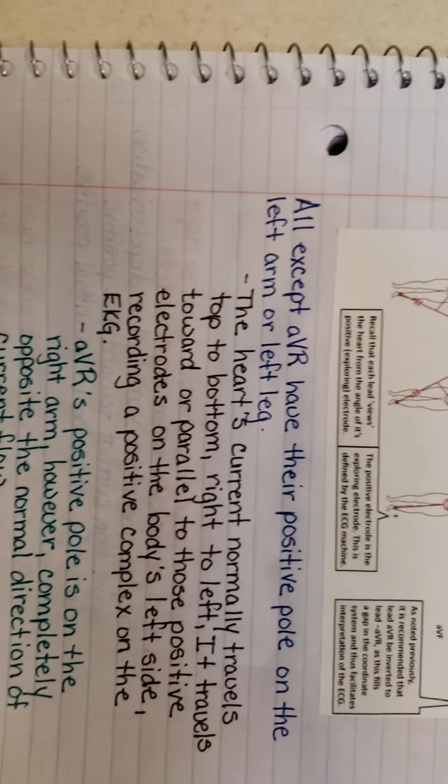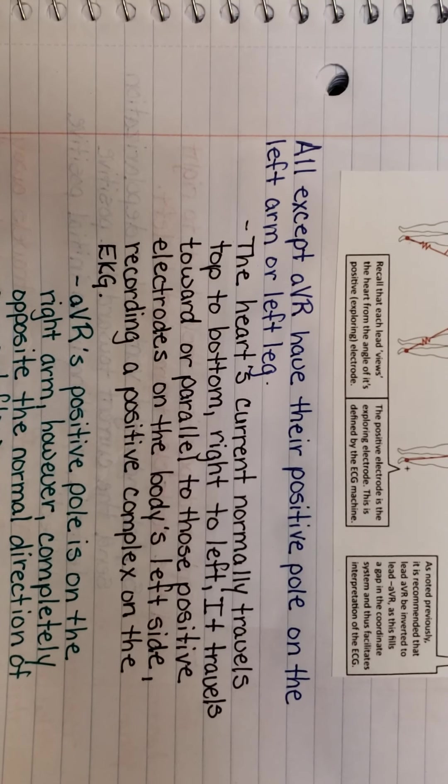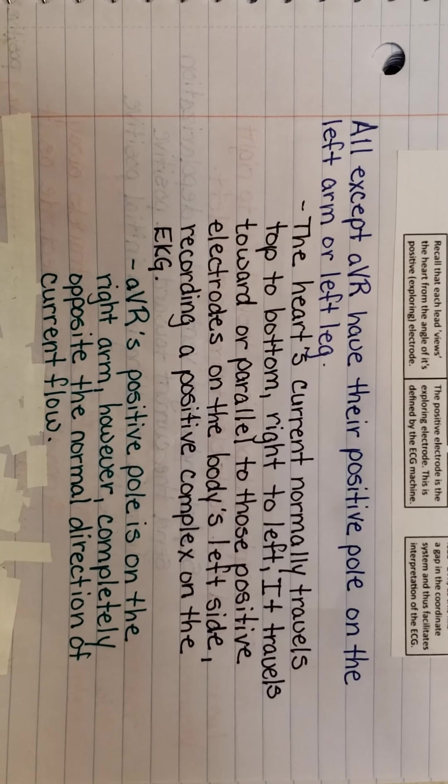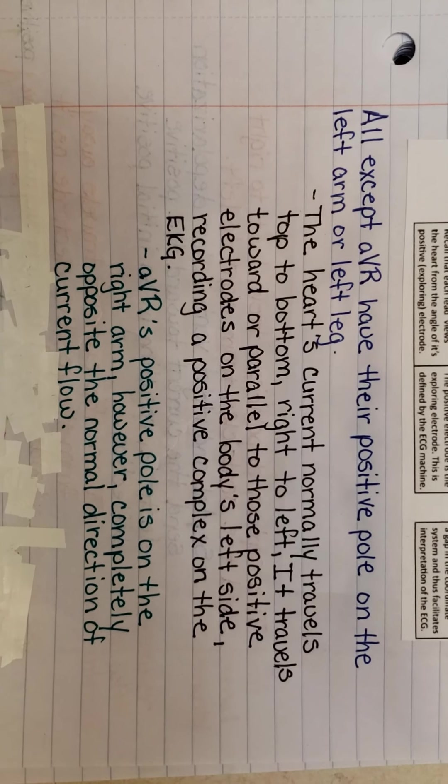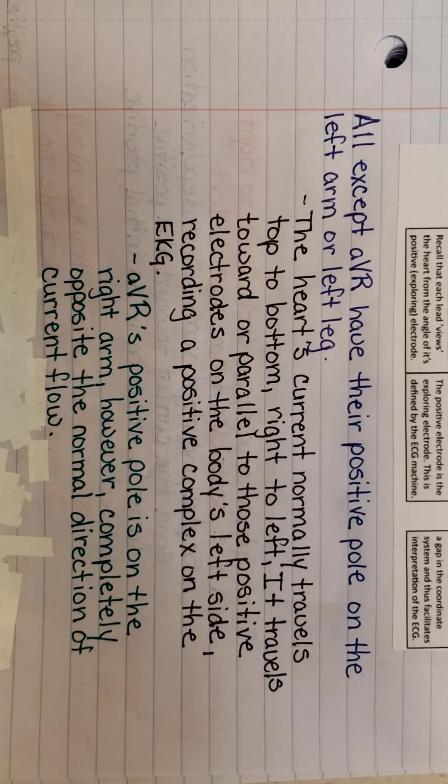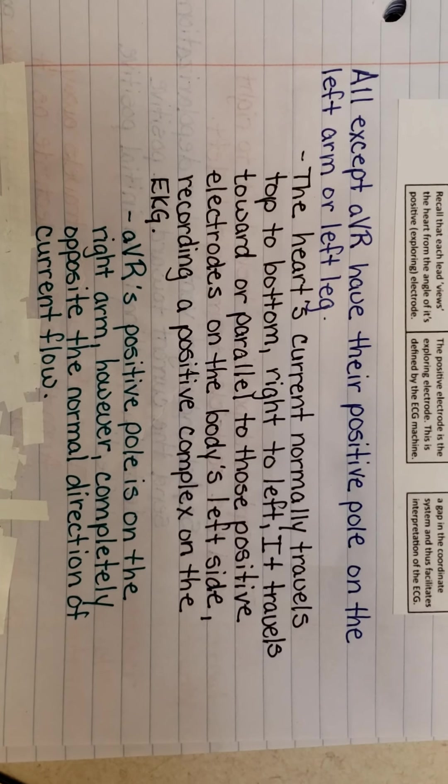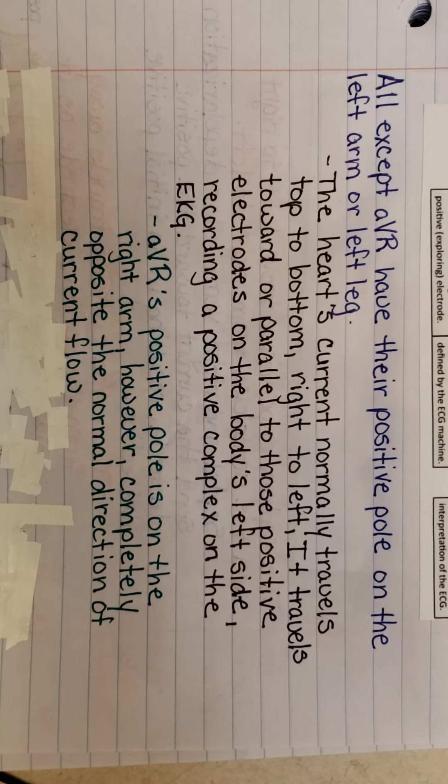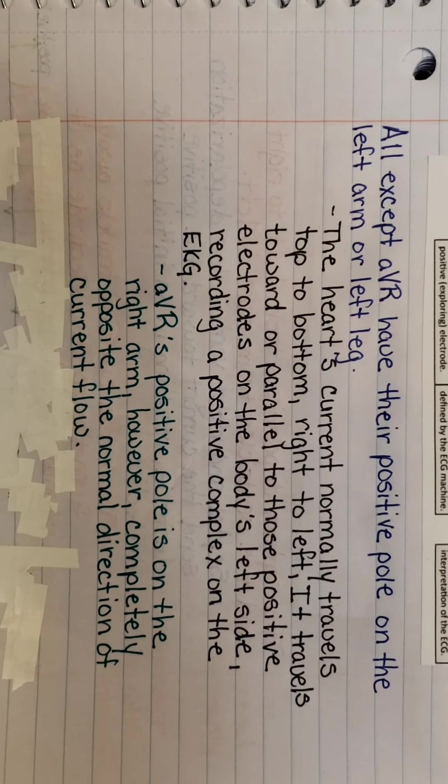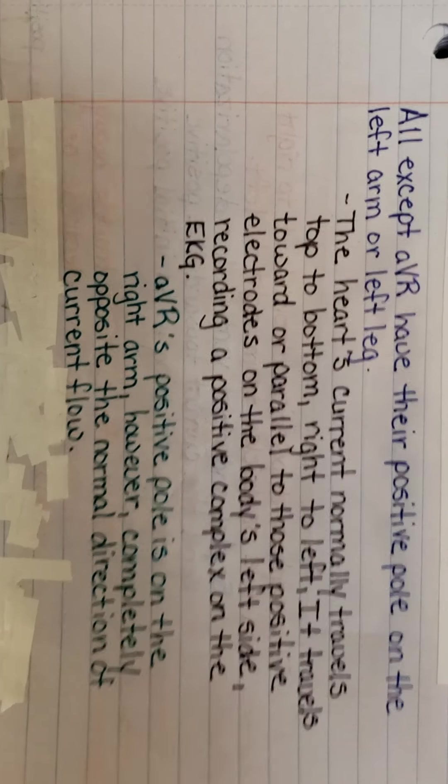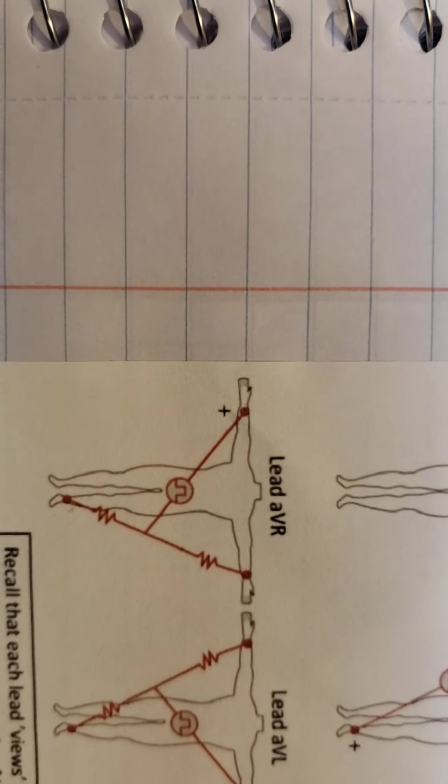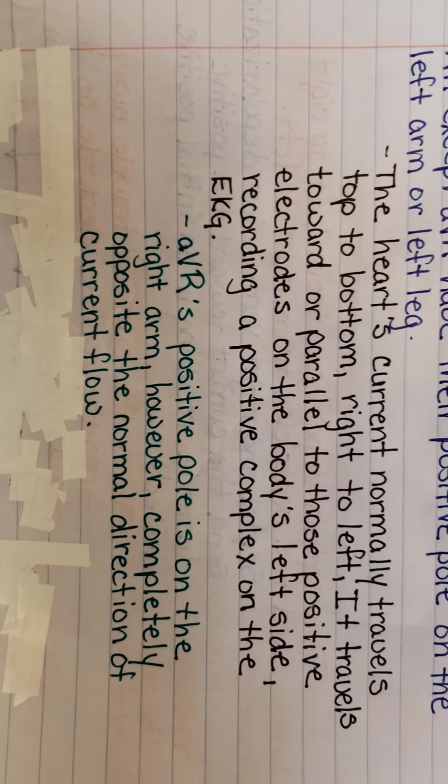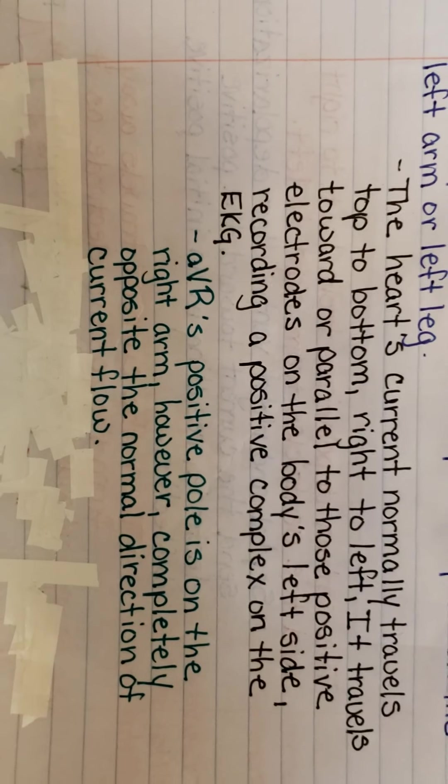All except AVR have their positive pole on the left arm or left leg. The heart's current normally travels, remember, top to bottom, right to left. It travels toward or parallel to these positive electrodes on the body's left side, recording a positive complex on the EKG. AVR's positive pole is on the right arm. So, therefore, it's traveling in the opposite direction of a normal direction of current flow.